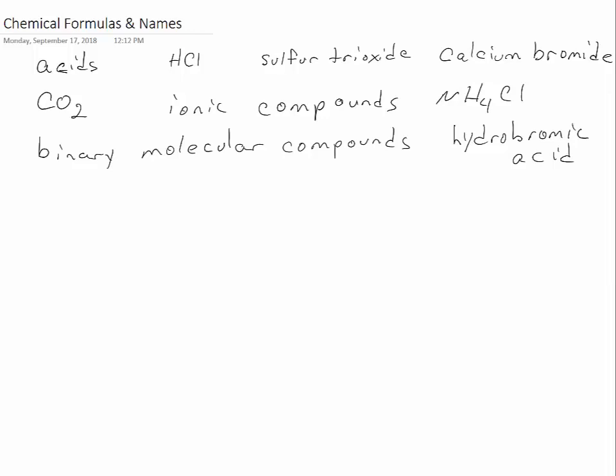This is the pre-class video for naming and writing formulas for chemical compounds. There are several different kinds of compounds that we need to be able to name and write chemical formulas for. Acids are one of those categories, and we need to be able to pick out any acids in this list. It's really nice if you're given the name for an acid because it's always going to have acid in the name.